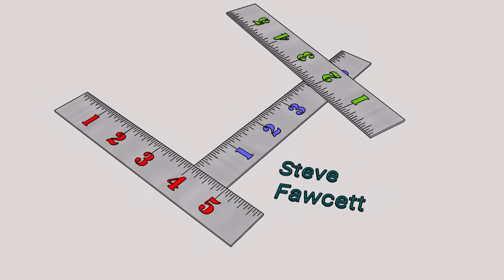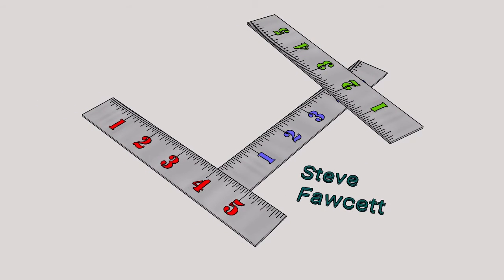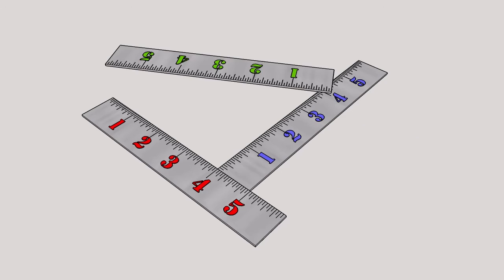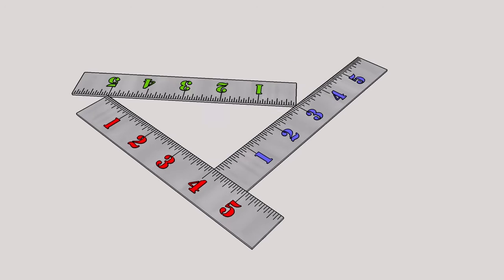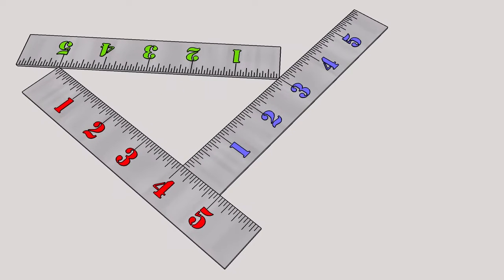And then the green ruler, which will swing round and will represent the hypotenuse. The start of the green ruler will line up with the number 3.